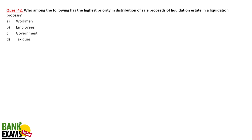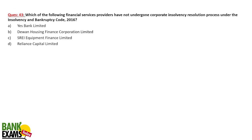Regarding highest priority in sale proceeds when liquidating a company — when a company's assets are being sold to recover dues of a bank or financial company, the highest priority goes to workmen and employees. They are paid first; taxes and others come later.